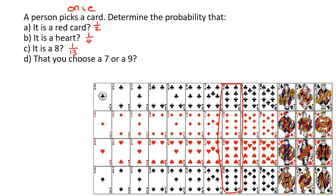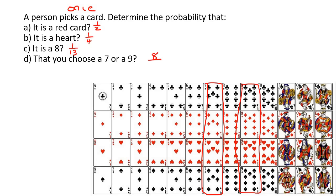What is the probability that you choose a 7 or a 9? You're only picking once, but it could be a 7 or it could be a 9. There are 4 sevens and 4 nines, so that's 8 cards altogether — 8 out of 52, which simplifies to 2 out of 13.